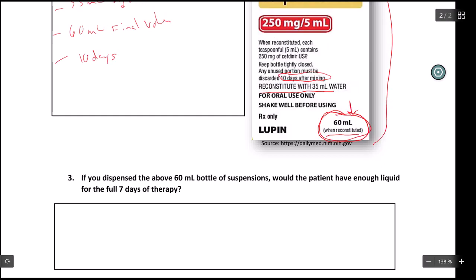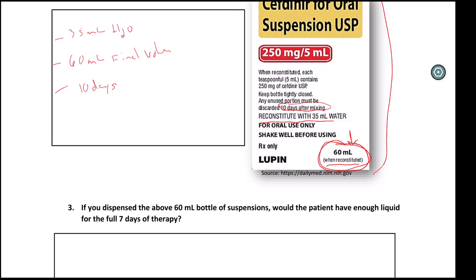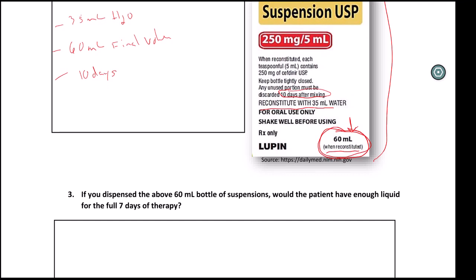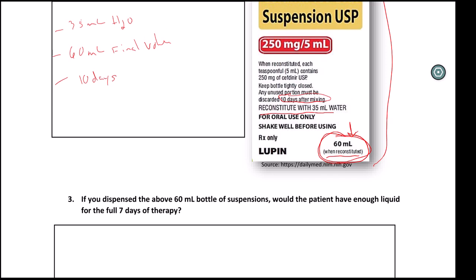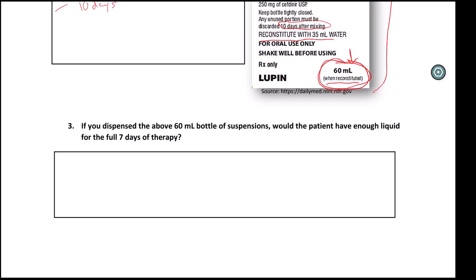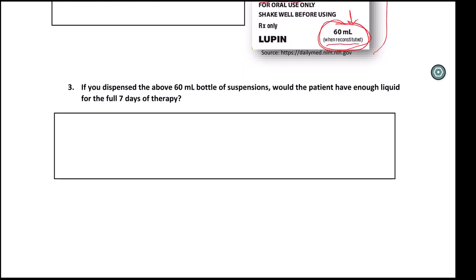In compounding, we do the same thing when we make a compounded preparation. We give it a beyond use date. Expiration dates are for commercial products. But once we compound something like you're adding water to it, it could be considered a compound. So we're giving it a beyond use date.